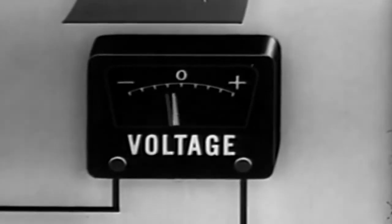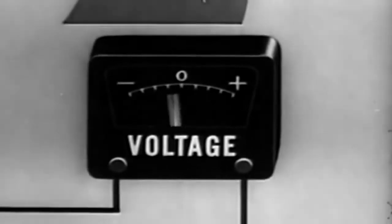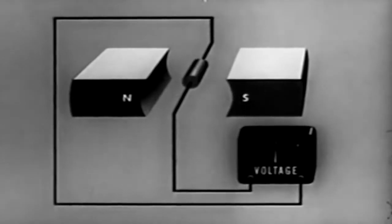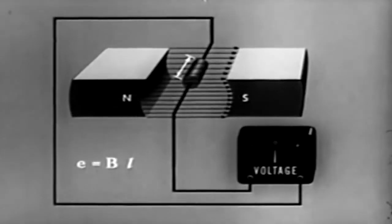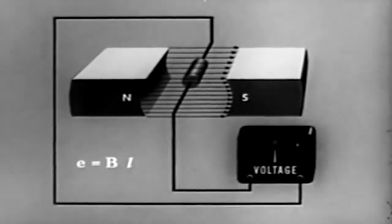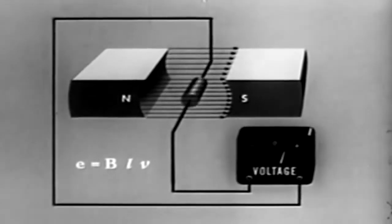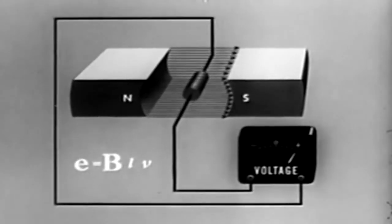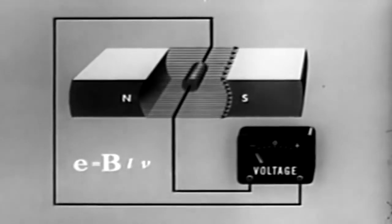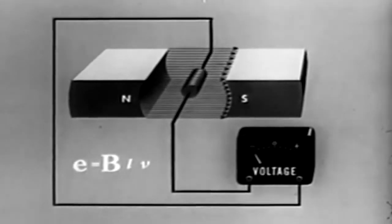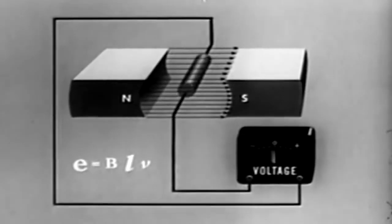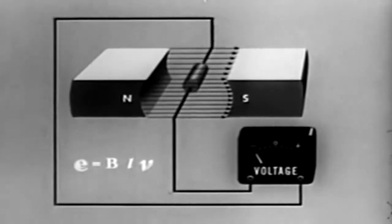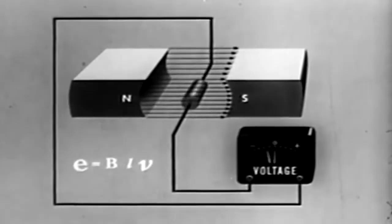We can determine the amount of instantaneous EMF by a simple formula. The instantaneous EMF E equals B, the strength of the field, times L, the length of the conductor cutting lines of force, times V, the velocity of the conductor. An increase in the number of lines of force increases the instantaneous EMF. Increases in the length of the conductor also increase the EMF, and the greater the velocity of the conductor, the greater the EMF.